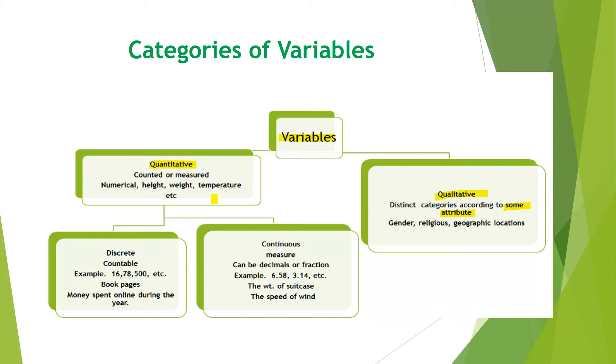Quantitative variable is further divided into two categories. One is called the discrete variable and the second is called the continuous variable. If the quantitative variable is counted, then it comes to the category of discrete variable. Examples are: 16 or 78 candies or 500 boxes, book pages, money spent online during the year. Suppose you spend $500 or $1000, you can count. If you count, it is called the discrete variable.